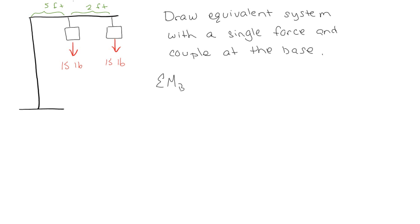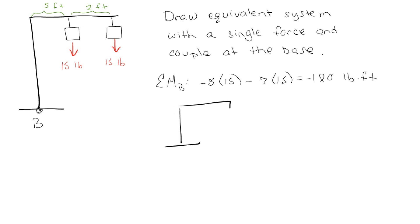Looking at the sum of the moments about the base: we have 5 times 15 — that's a negative — and then 7 times 15 — that's another negative — so that gives us negative 180 foot-pounds. Which means if I redraw this, I can move the 30 pounds to the base, but then I have to put in that 180 foot-pound moment to account for the fact that the original moment no longer exists because I've moved the force.